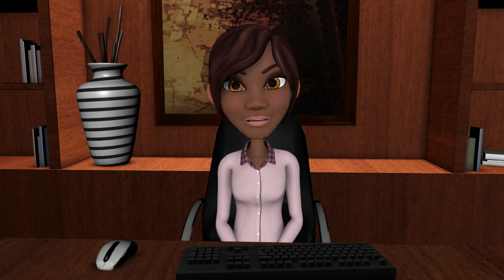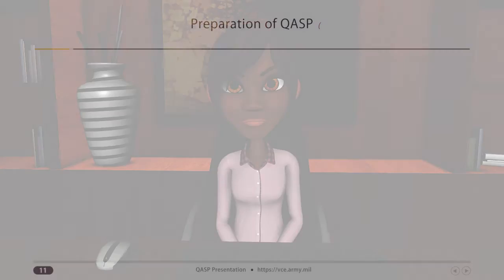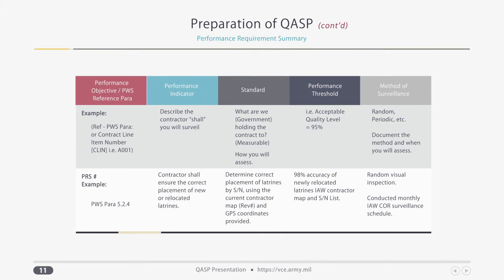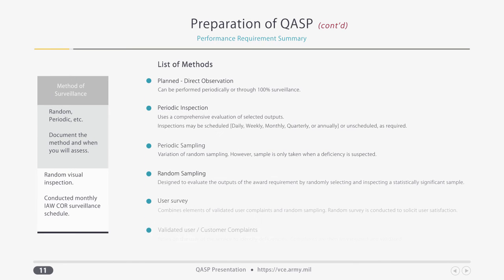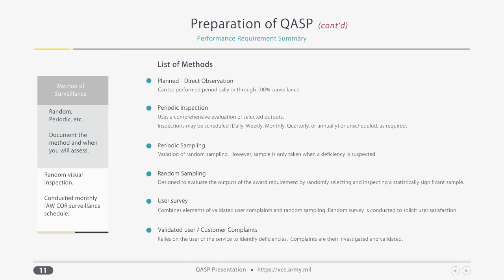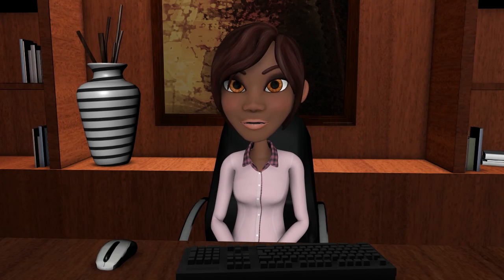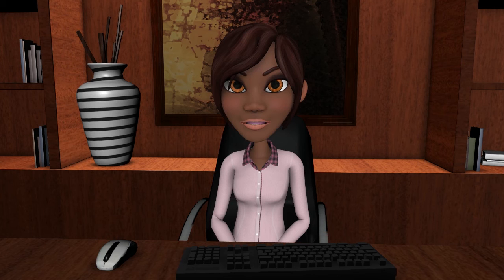Yes. Next is the how, or the method of surveillance. When creating your plan, consider the manner in which the inspections will be conducted. Will the COR be looking at 100%, doing random sampling, direct observations, periodic observations, etc.? Last is the when, or the frequency, of COR inspections. Generally, those requirements which fall into a higher risk would need to be inspected at a greater frequency than those that pose a lower risk. Document, document, document — this is what ties all this together.